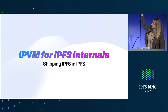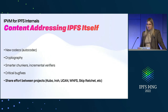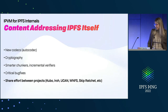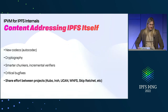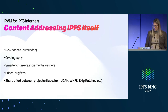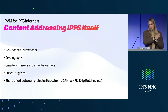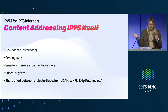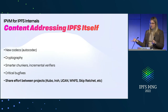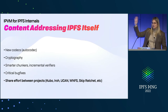IPVM for IPFS internals — so we can ship IPFS in IPFS. Content-addressing IPFS itself, shipping around modules that do IPFS things that we can integrate deeply into nodes. Possibly not for everything — if you have something that's really performance critical, maybe you don't do this part. But for shipping updates, bug fixes, having new codecs — autocodec is the next session — new kinds of cryptography, bug fixes, and especially sharing effort between projects so we're not rewriting the same code n times. There's nothing wrong with having Go and Rust implementations of something; for critical portions, that totally makes sense. But if you're trying to implement a new feature, this might be at minimum a nice place to start so you can ship the feature today and optimize it later.